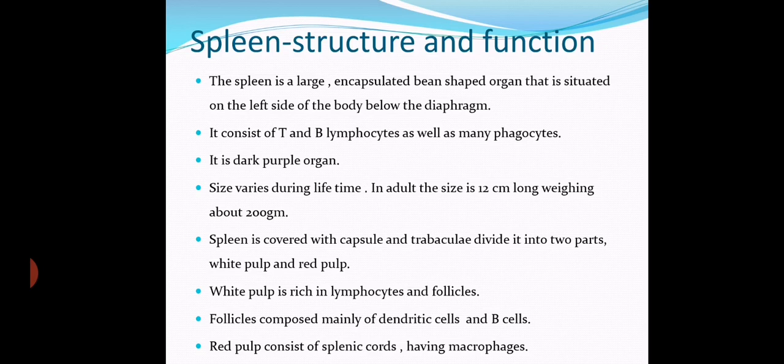The spleen contains T cells, B lymphocytes, and macrophages. Macrophages engulf antigens and enhance the process of phagocytosis — the engulfment of foreign particles or antigens. The spleen is a dark purple organ.